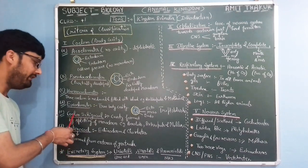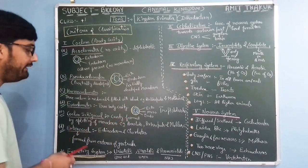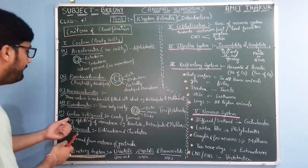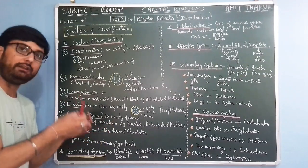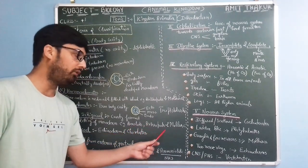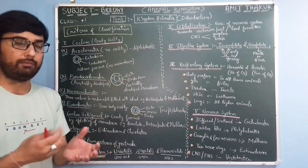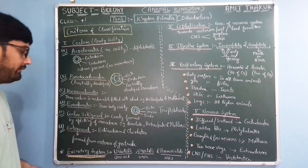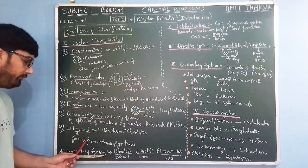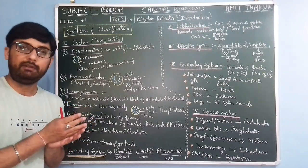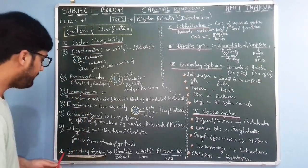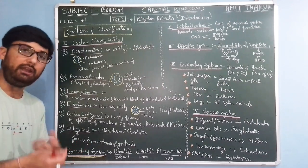Then we have coelom schizocoely — schizocoely means there is a cavity which is formed by splitting of mesoderm. The mesodermal middle layer starts splitting, which forms a schizocoely. So this body cavity is formed after the splitting of the mesodermal layer, like in annelids, arthropods, and molluscs. And then enterocoely — like in echinodermates and chordates, including human beings — it is formed from the archenteron of the gastrula during embryonic development. The cavity is formed between the mesoderm and the endoderm from the archenteron of the gastrula.